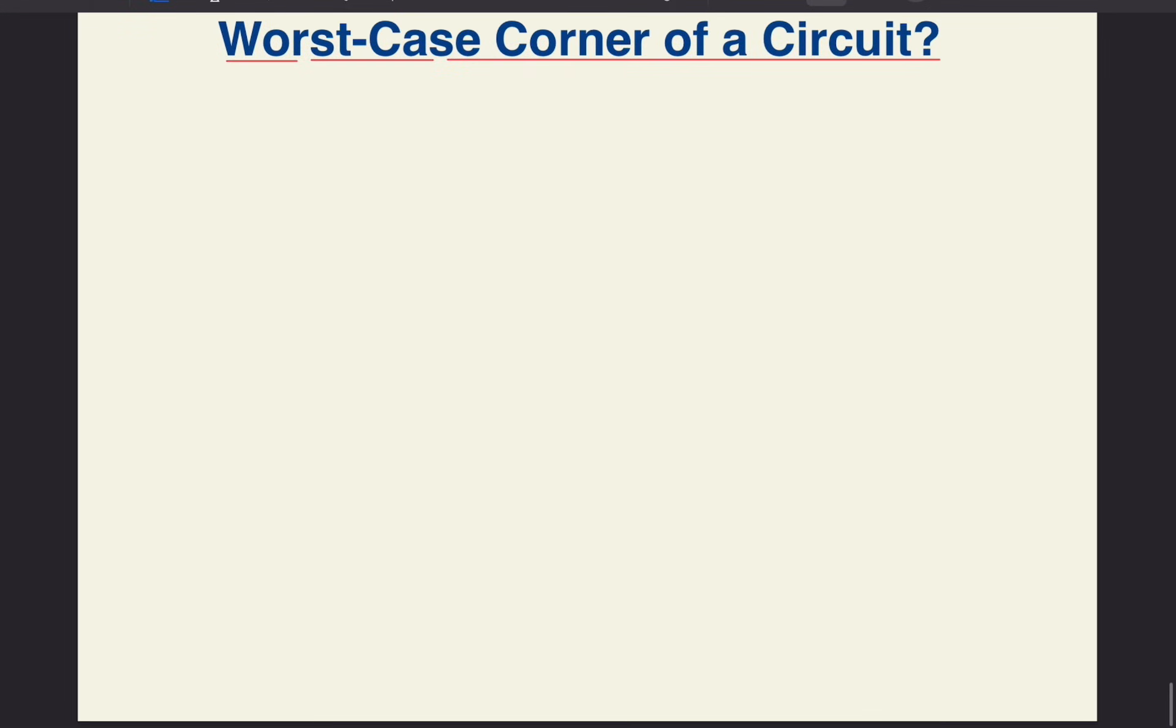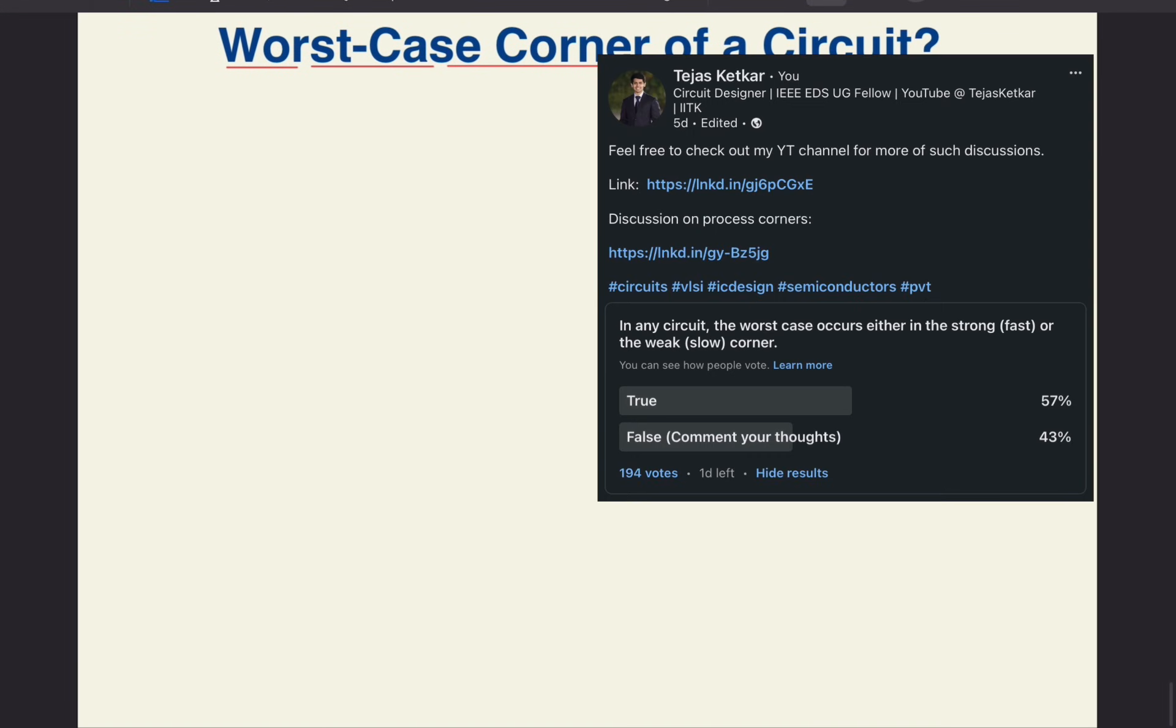Great, so as promised, let's look at the poll that I had conducted. Majority of the viewers voted that the worst case corner of a circuit occurs either in the strong or the weak corner. Well, that's not quite true. It depends upon the performance metric that we are interested in and also on the circuit topology. For example, if someone is interested in the switching threshold of a CMOS inverter and they want it to be in the middle of the supply voltage range, the worst case would be when the PMOS is strong and the NMOS is weak, or when the NMOS is strong and the PMOS is weak, that is in the skew corners.